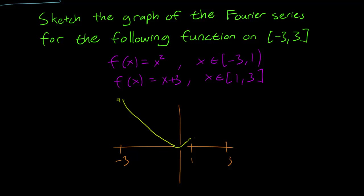And then at 1, it hits the point x plus 3. So at 1 it becomes 4. And then it becomes a linear equation after that, and it terminates at 6. So it looks something like this. This is what our graph of f(x) looks like: it's x squared from minus 3 to 1, and it's x plus 3 from 1 to 3.